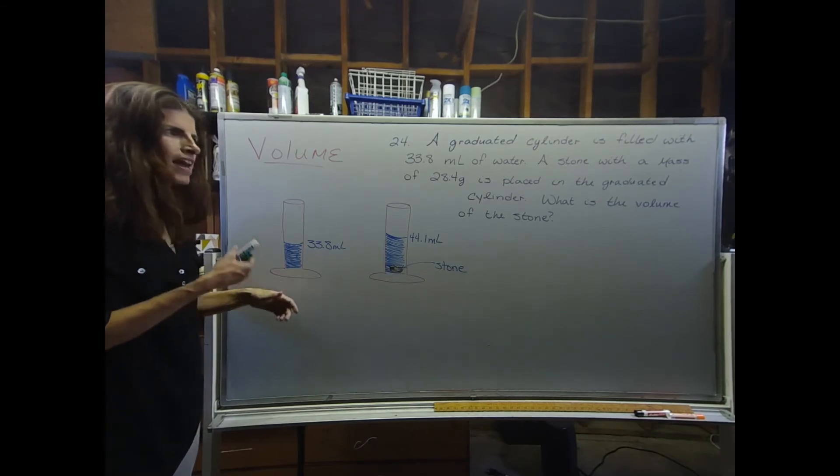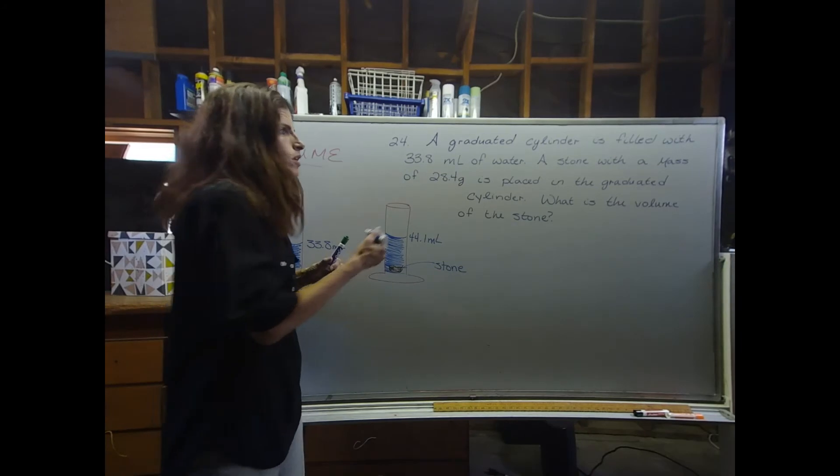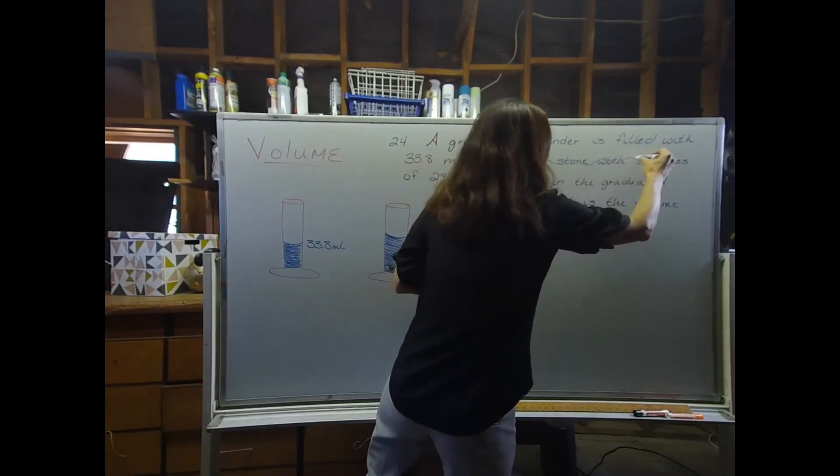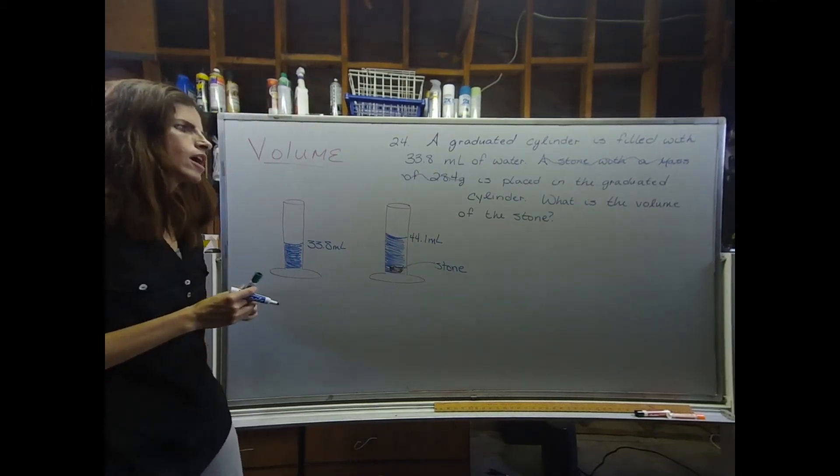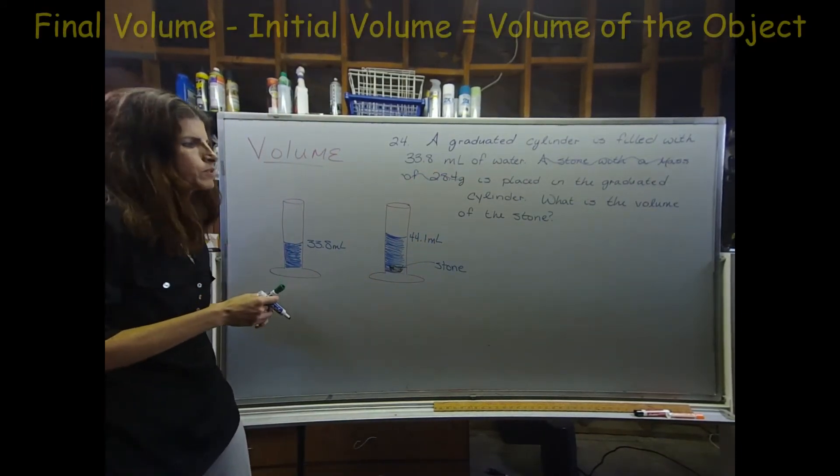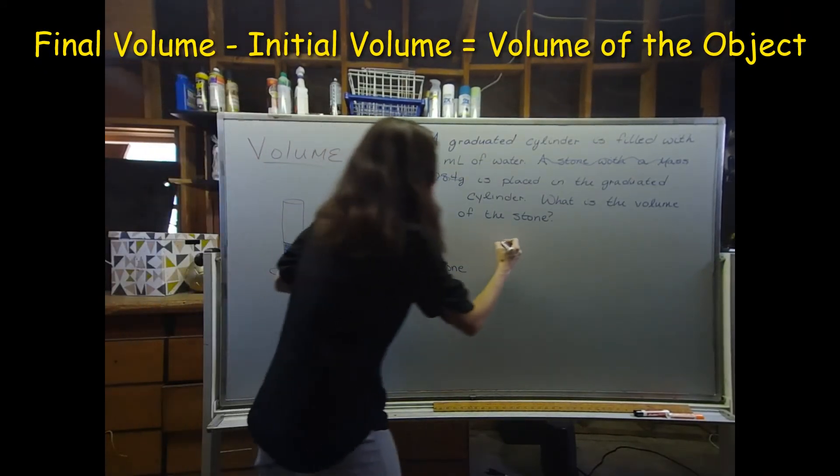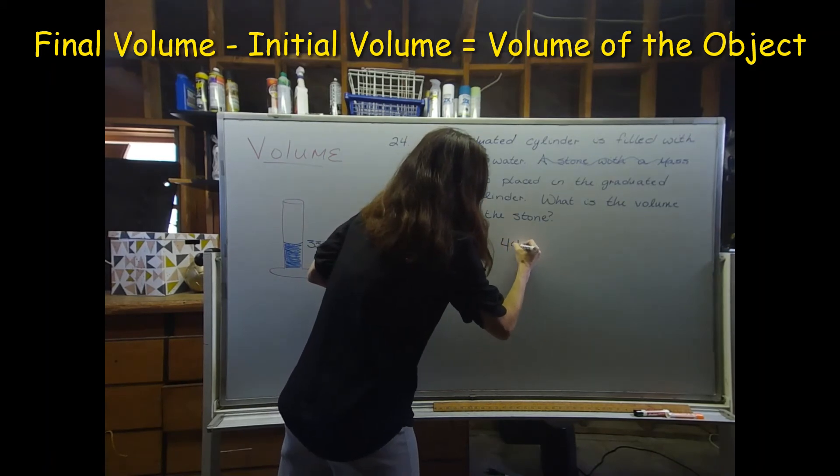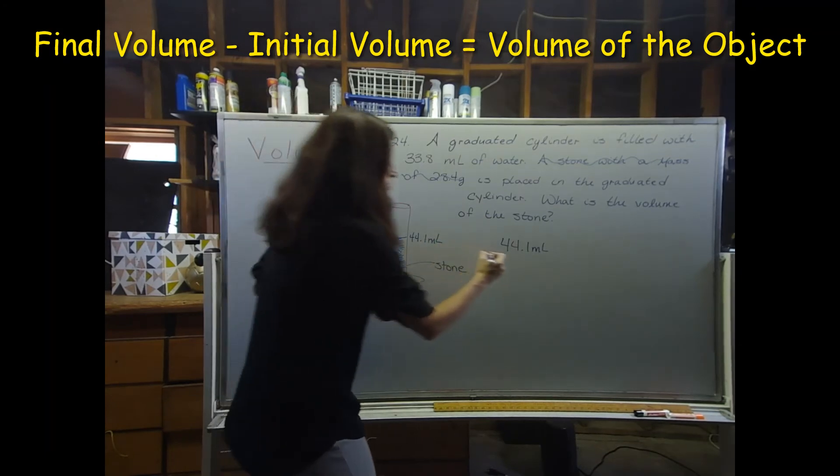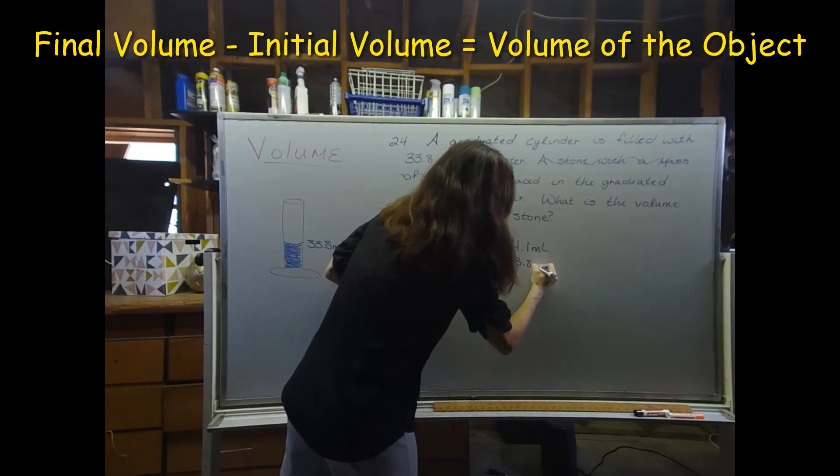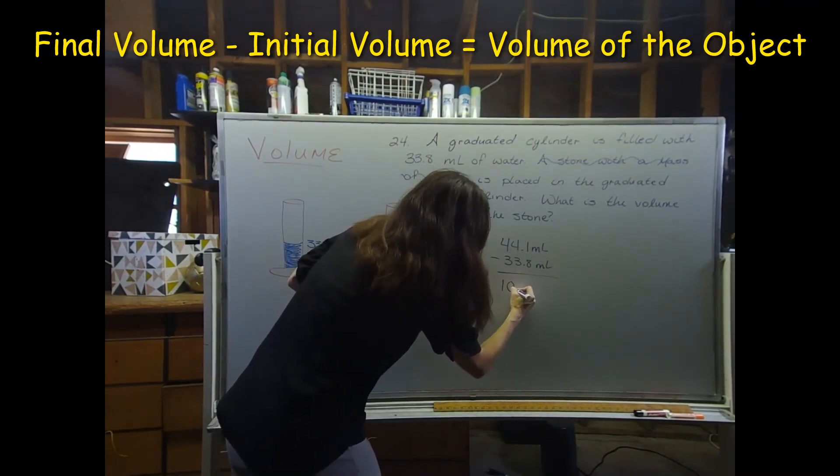Well, right off the bat, I'm kind of recognizing something. Why do I need the mass? And it turns out I don't. It's just extra information. So I'm going to cross it out. I don't care that the stone has a mass of 28.4 grams. I'm going to use volume by displacement. I'm going to do 44.1 minus 33.8 to calculate the volume of that stone. So the volume of the stone is 10.3 milliliters.